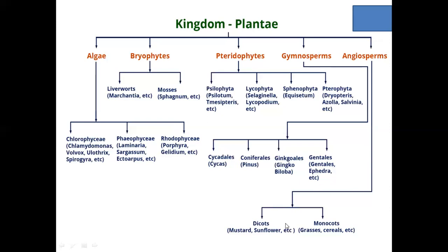Angiosperms are of two types: Dicots and Monocots. If you have two cotyledons, they are Dicots — for example, mustard and sunflower. Monocots have one cotyledon — for example, grasses and cereals. So this is the Plant Kingdom classification outline, with Kingdom, Division, and Classes. These three examples are available for each.